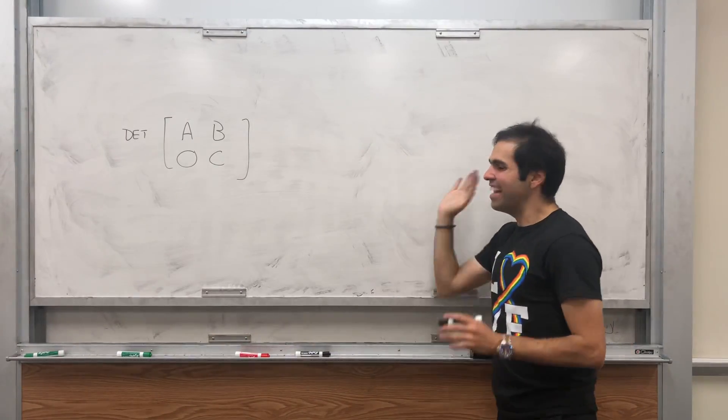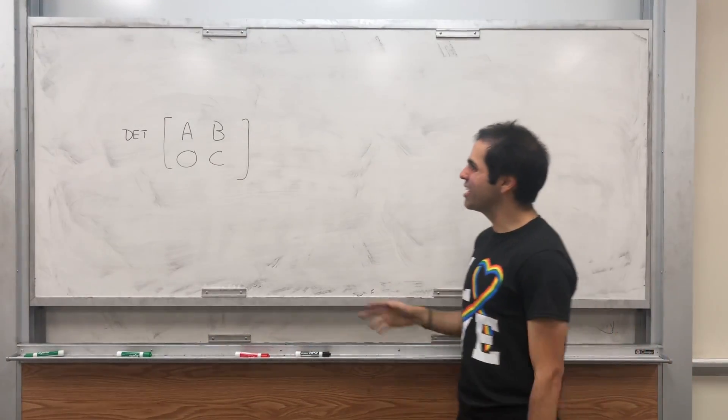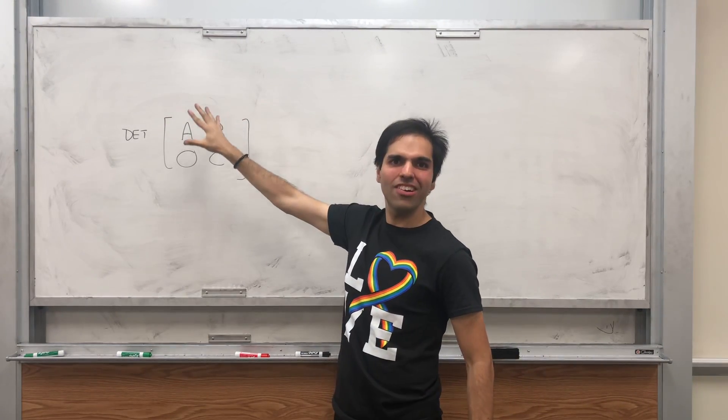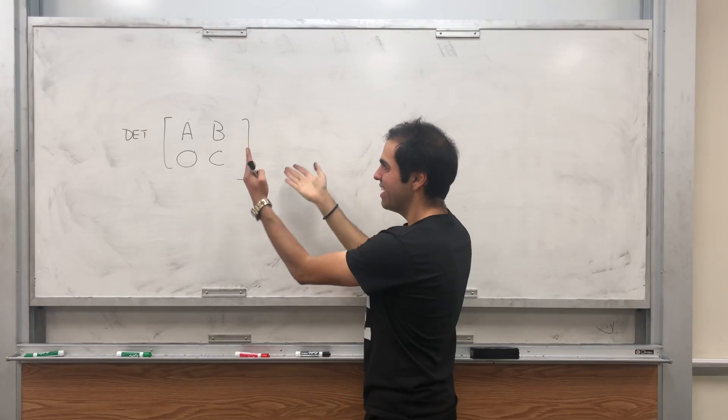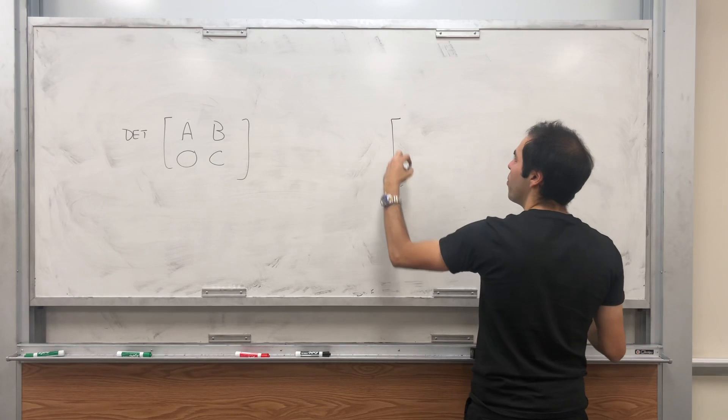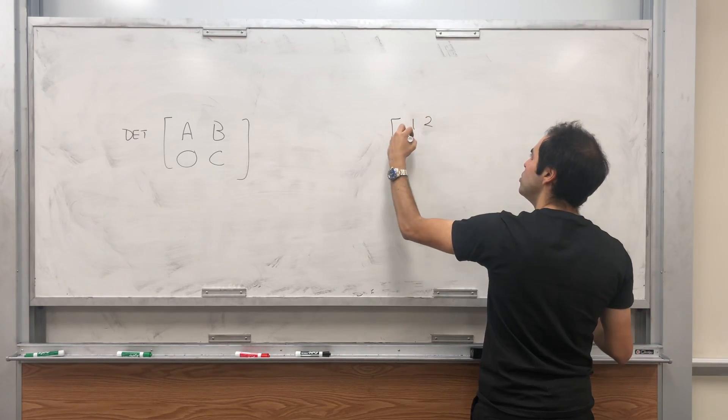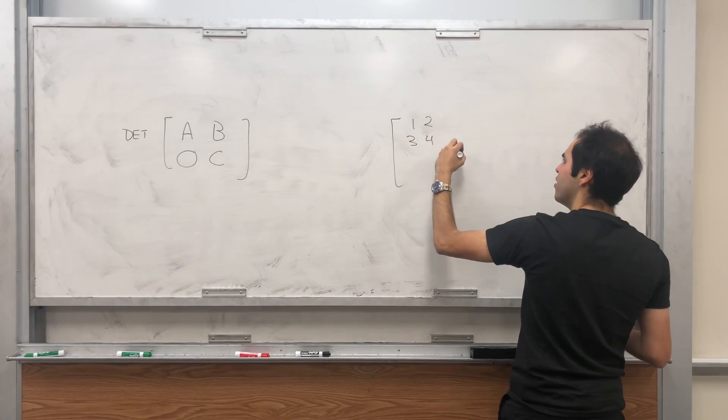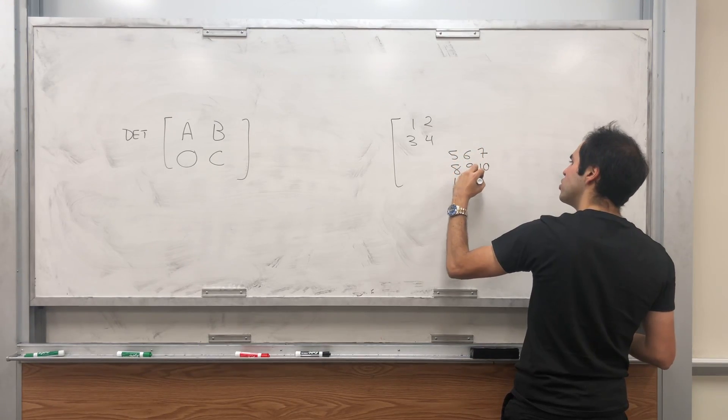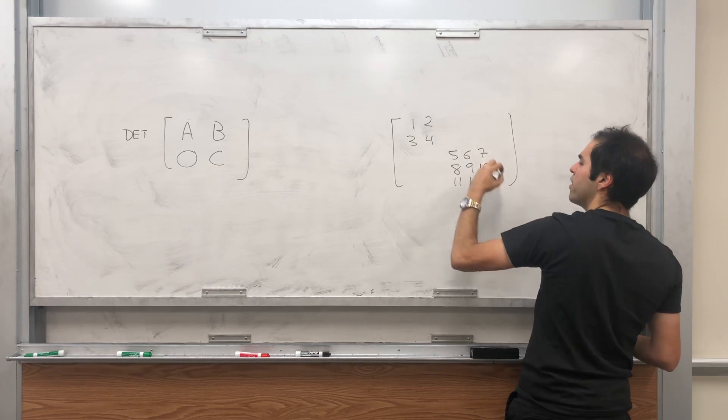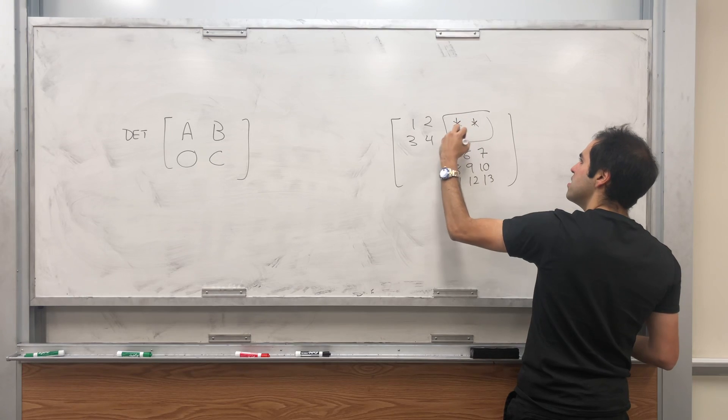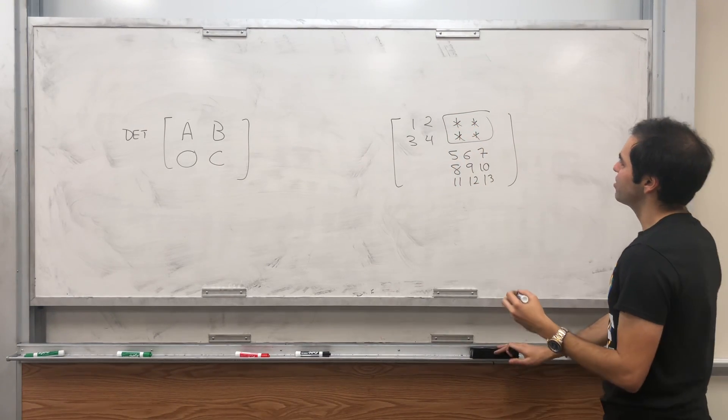All right, thanks for watching. Today I want to do something really cool: calculate the determinant of what's called a block matrix, namely a matrix with little matrices inside. For example, the matrix with entries 1 2 3 4 and then 5 6 7 8 9 10 11 12 13 and then whatever here. So this is what's called a block matrix.